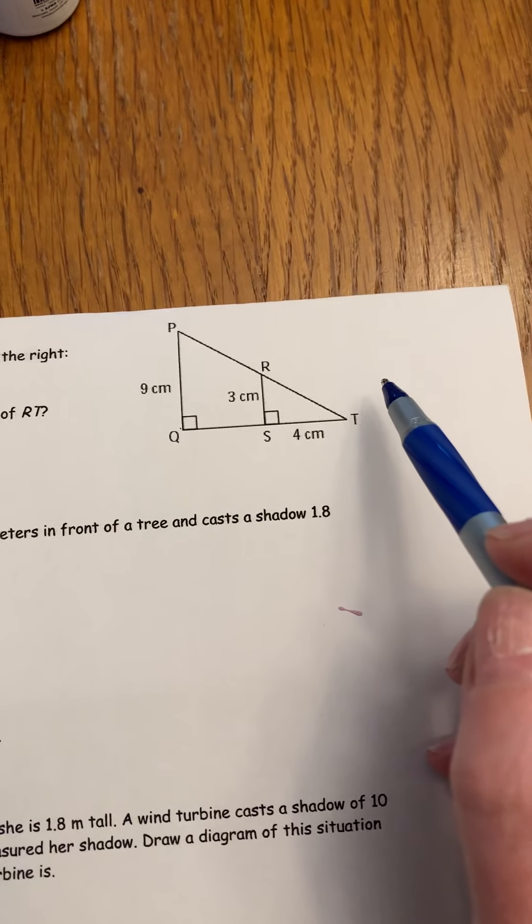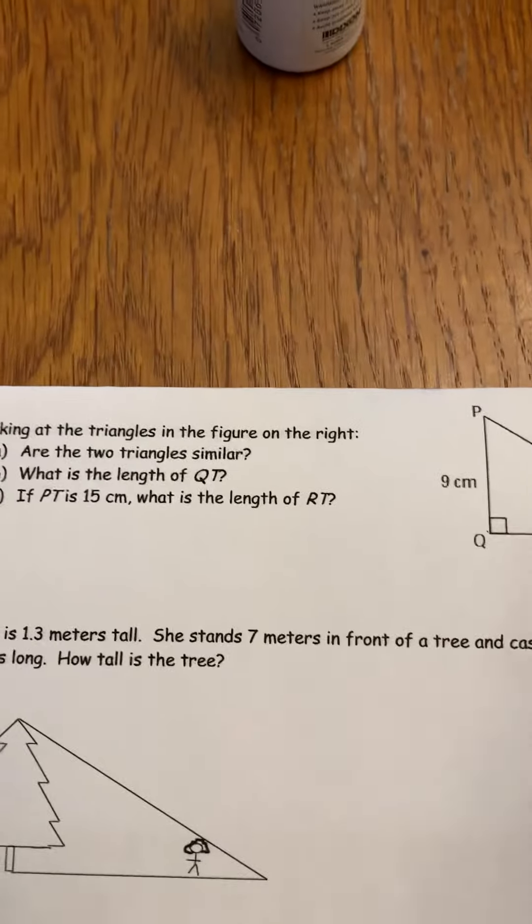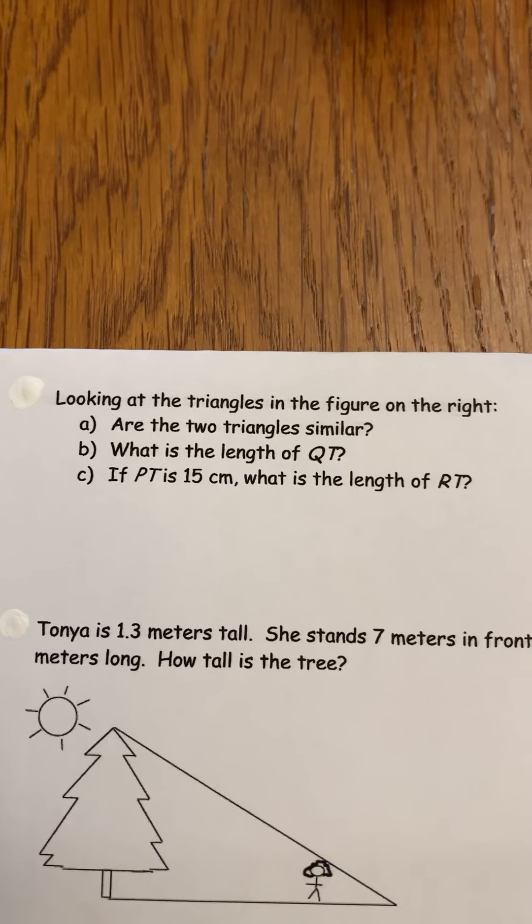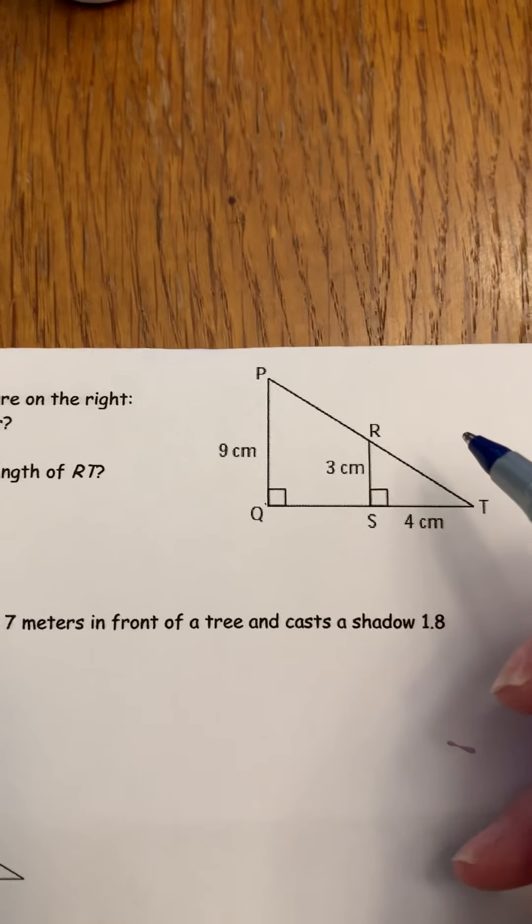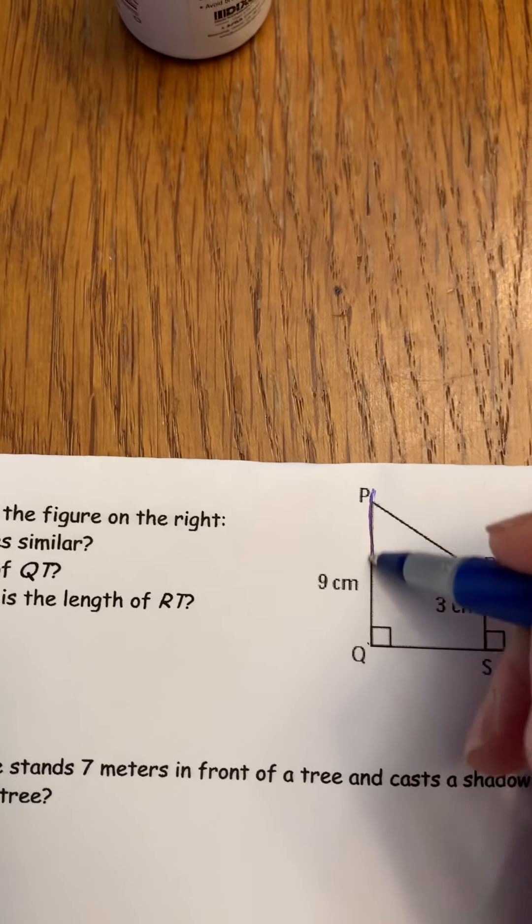It's just really important that you can see the shared characteristics here. Okay, so are the two triangles similar? And the answer is yes, and I'm going to show you why. There are two triangles here, so I'm going to try and do this here.